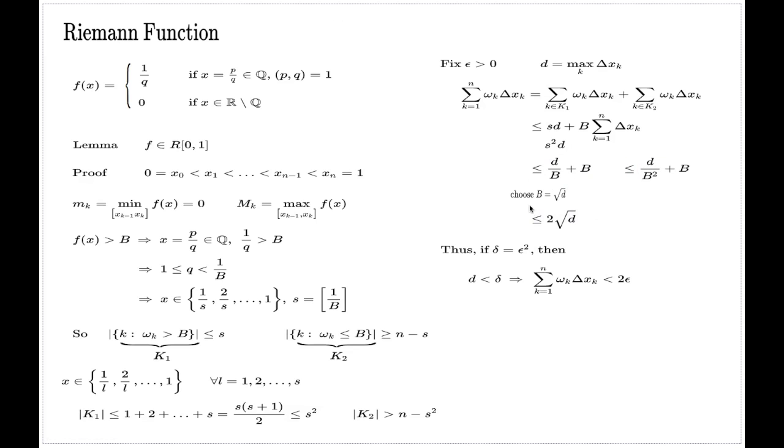And now I have to change my choice for B. Rather than choosing B = √D, I will choose B = ∛D. With this new choice of B, this expression will become 2∛D.